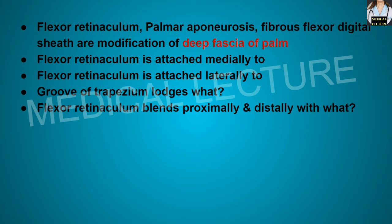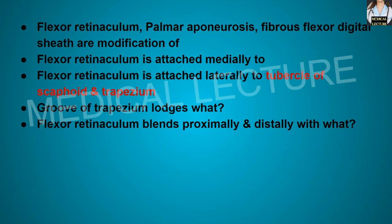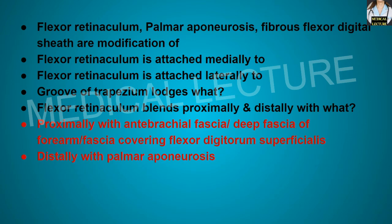Flexor retinaculum is attached medially to the hook of hamate and pisiform, while laterally it is attached to the tubercle of the scaphoid and the trapezium bone. The groove of trapezium lodges the flexor carpi radialis muscle. Flexor retinaculum blends proximally with the antebrachial fascia or the deep fascia of the forearm covering flexor digitorum superficialis, and distally with the palmar aponeurosis.